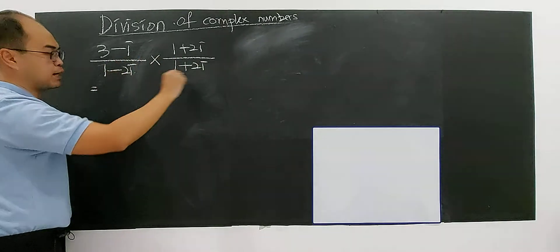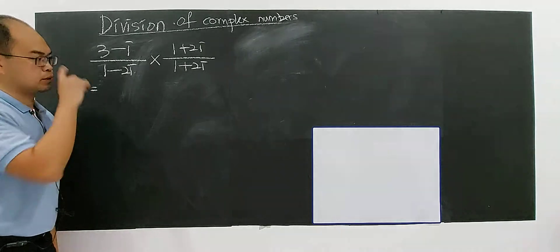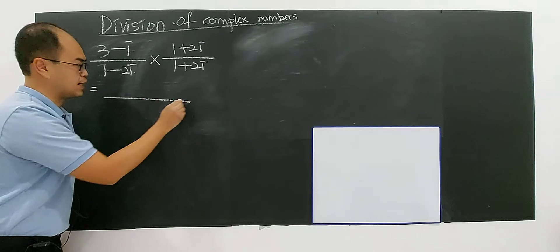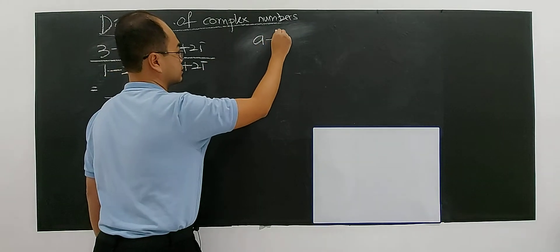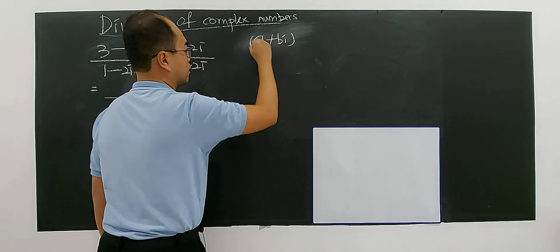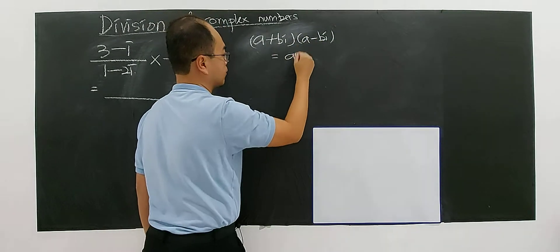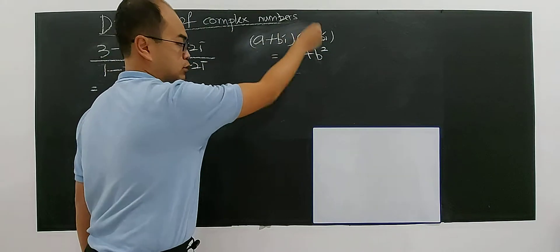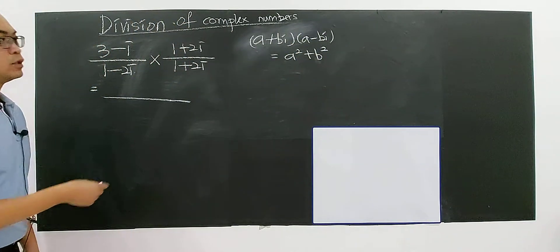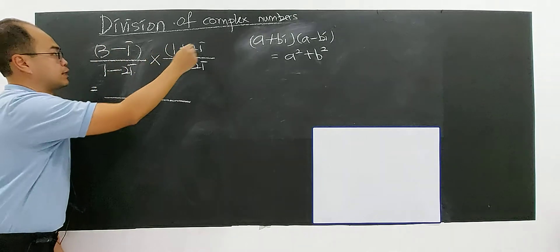Let's apply the formula. If you have a plus bi multiplied by a minus bi, you will have a to the power of 2 plus b to the power of 2. You can try to expand and you will finally find out to be in this form.